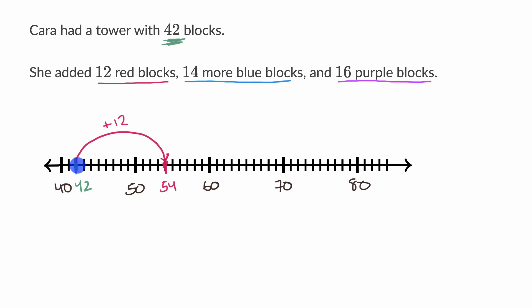And you could have done it another way. You could have just added right from the get go. You could have said, all right, I'm going to add 12. So it takes me eight to get to 50, and then I have four more left, gets me to 54.